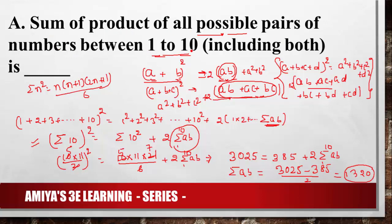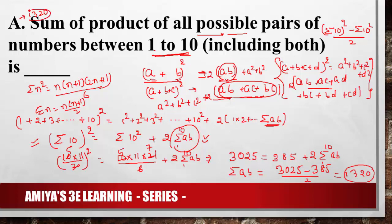So the formula to remember: sum of product of all possible pairs of numbers 1 to n is (Σn)² − Σn² all divided by 2. For 1 to 10 this gives 1320. For 1 to 15 use Σ15 and Σ15² in the same formula. The answer to question A is 1320, but that is not our main question.